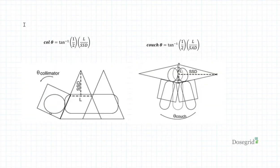The matching collimator angle and couch angle can be found using these formulas. Now, let's try an example.